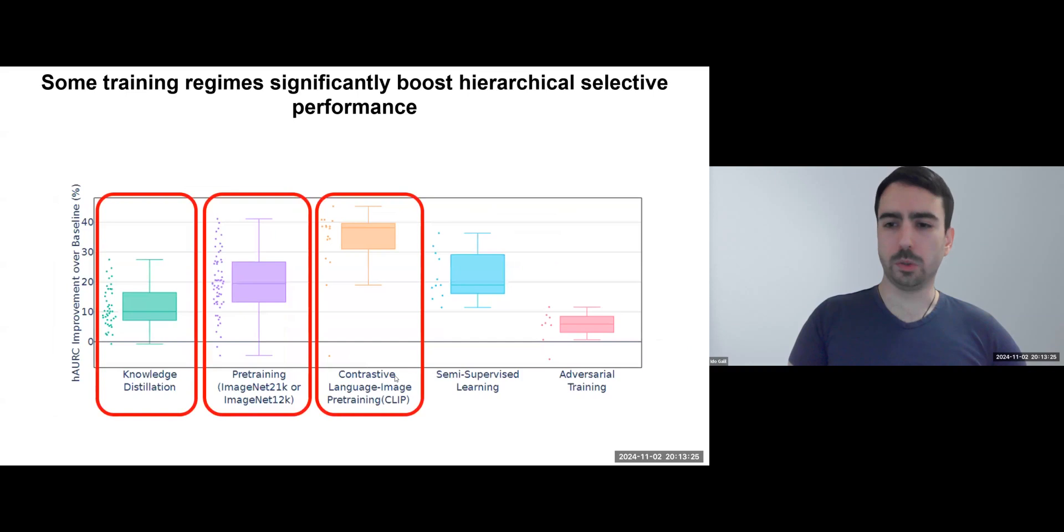We also explored how training regimes impact hierarchical selective performance across these models. The box plot shows the improvement in models trained with specific regimes. Most notably, contrastive language image pre-training led to very high gains.